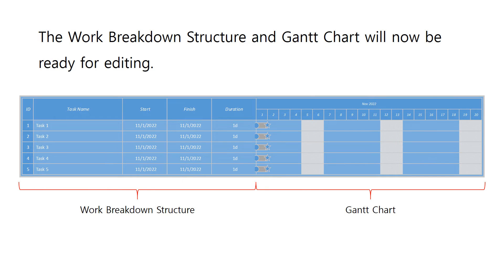Now the work breakdown structure and Gantt chart will be ready for further editing. The work breakdown structure is shown on the left, and on the right side you can see the Gantt chart visualized by horizontal bars. The WBS is comprised of five columns: the task number, task name, start date, finish date, and the duration. Notice the start and end shapes for the horizontal bars indicating the start and finish of every task. Also notice the white columns on the Gantt chart section — they indicate Saturdays and Sundays, highlighted since by default Microsoft Visio assumes there is no work during these days.